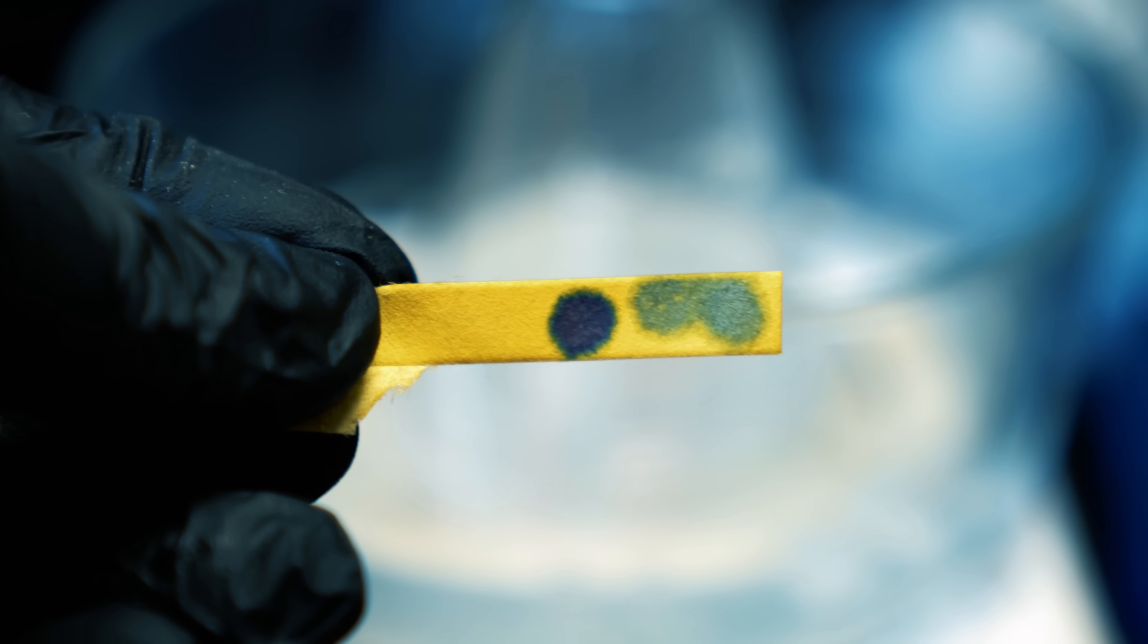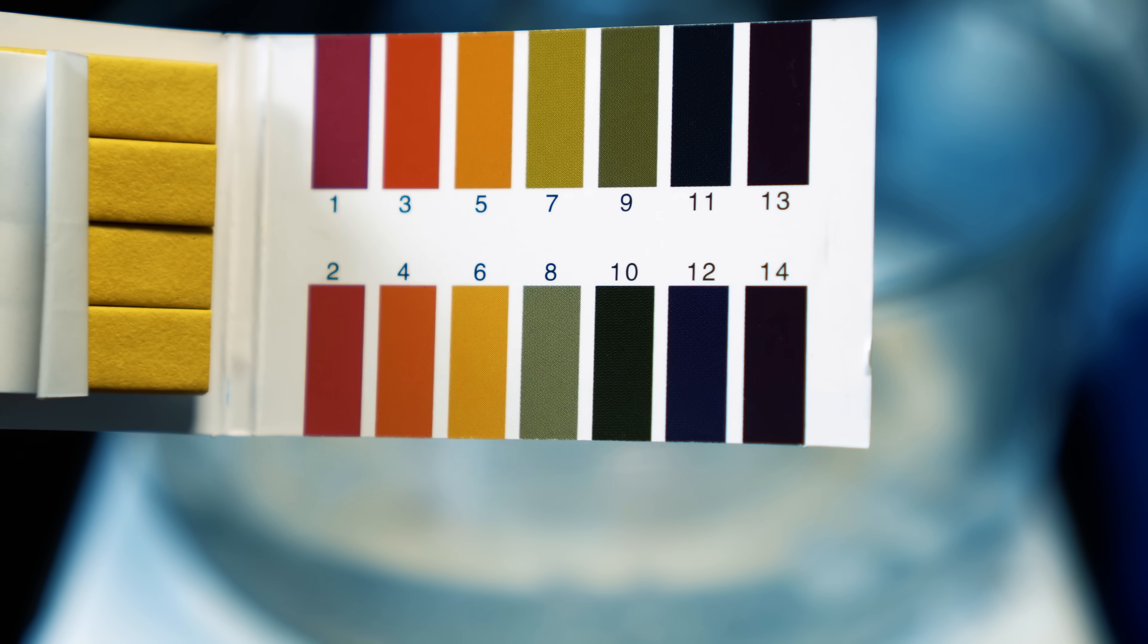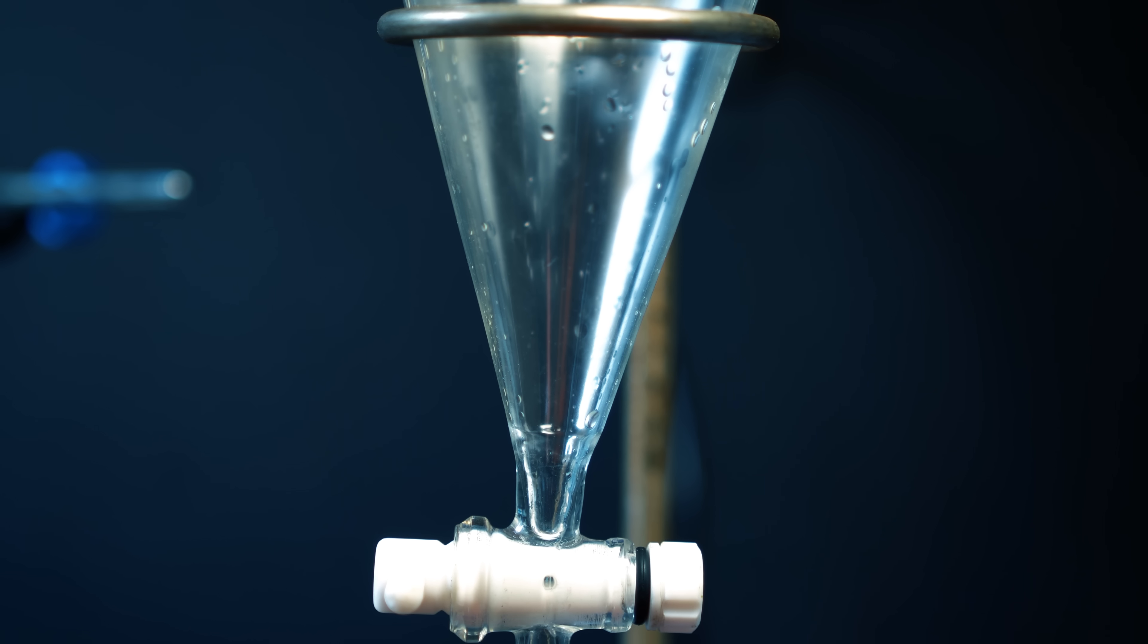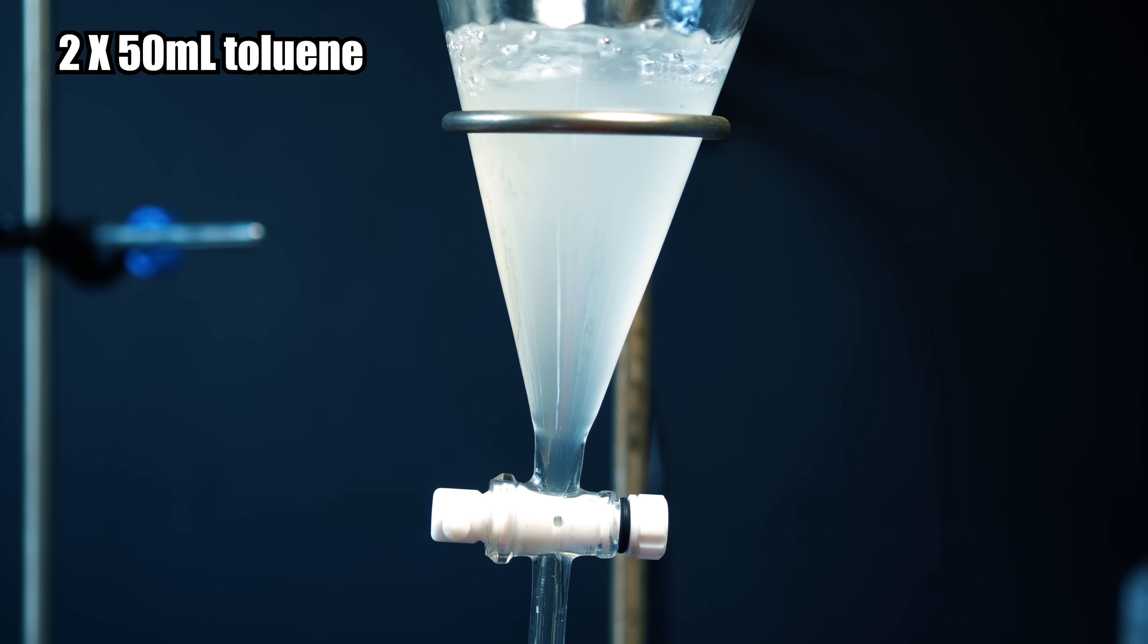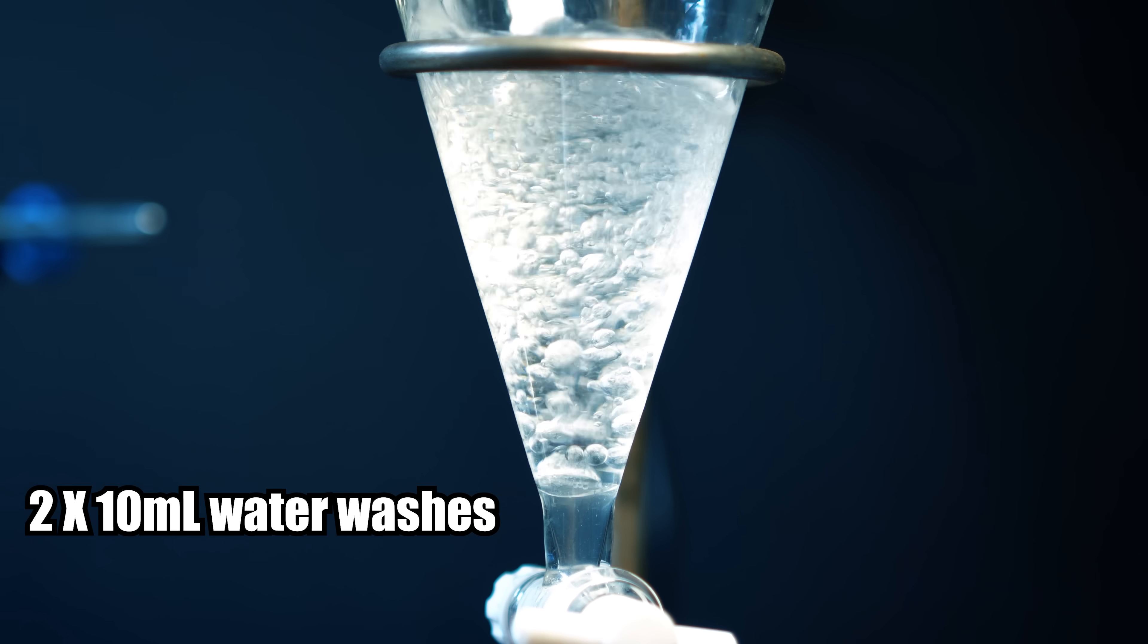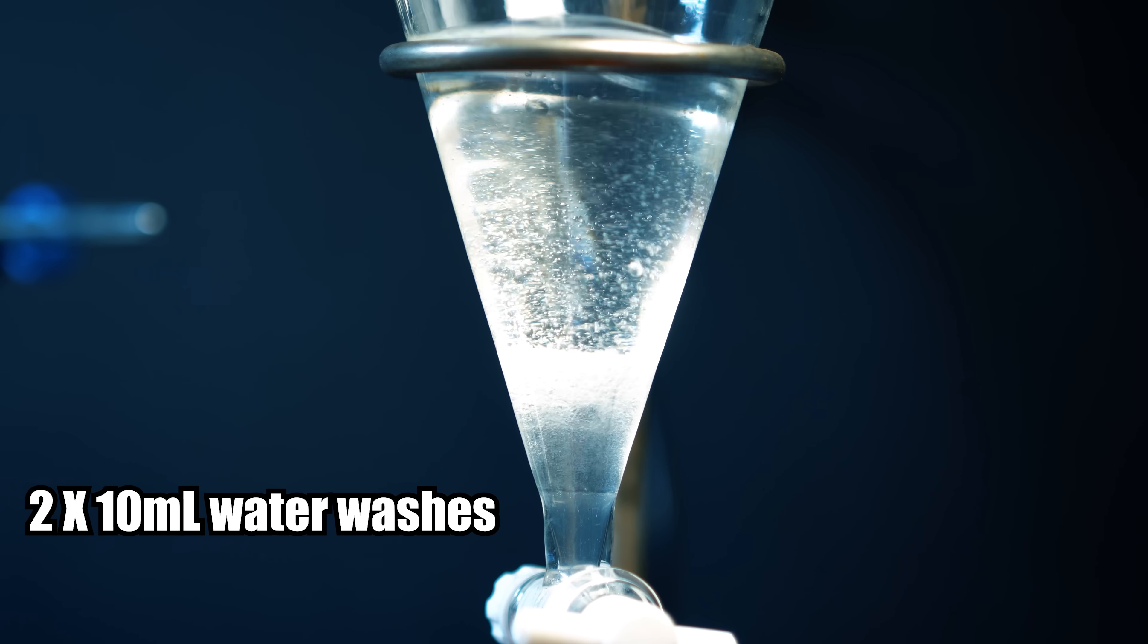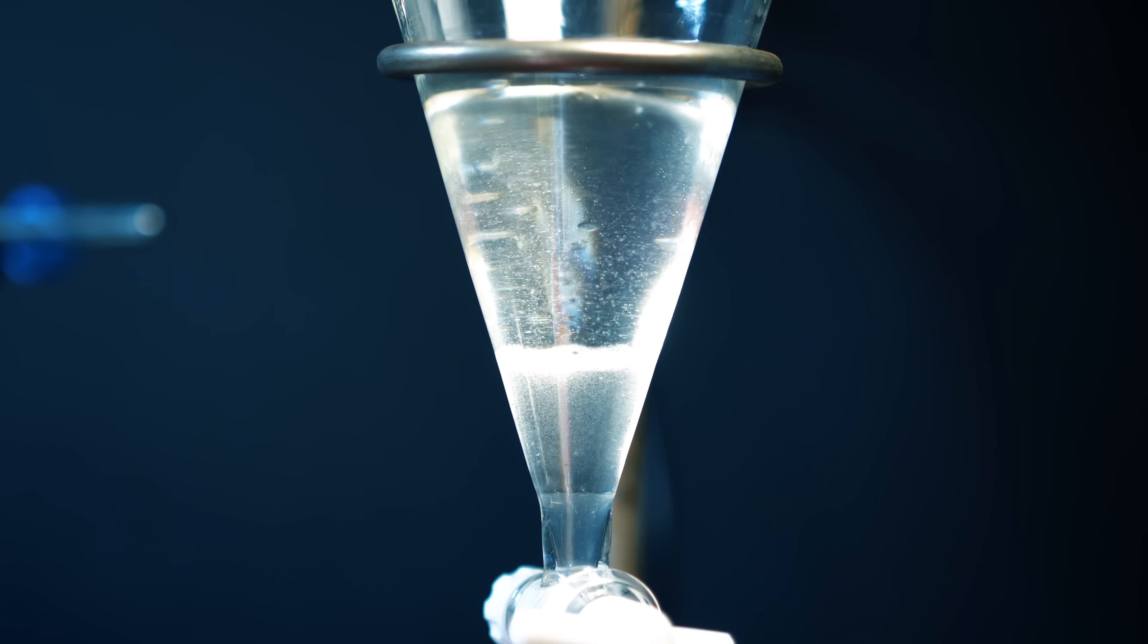When it was a pH of 12, this should be our freebase arecoline, which means we can extract it with an organic solvent. So I put our basic aqueous layer into the sep funnel, and we're going to extract with 50ml of toluene. The two toluene extracts were then washed twice with 10ml of distilled water. They were then dried with magnesium sulfate, filtered, and put into a flask.